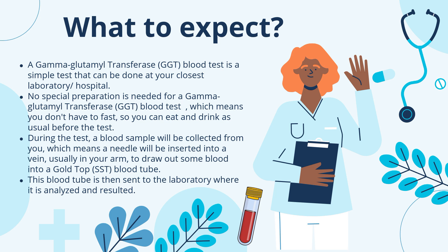During the test, a blood sample will be collected from you, which means a needle will be inserted into a vein, usually in your arm, to draw out some blood into a gold top or SST blood tube. This blood tube is then sent off to the laboratory, where it is analysed and resulted.